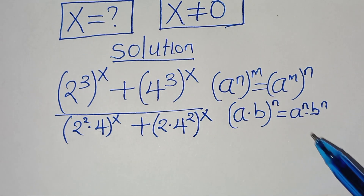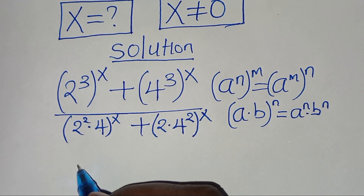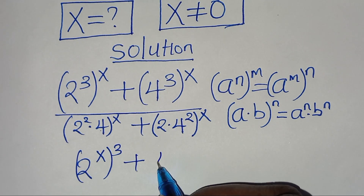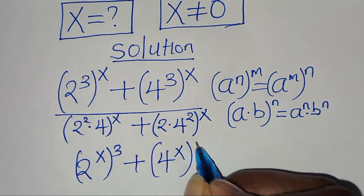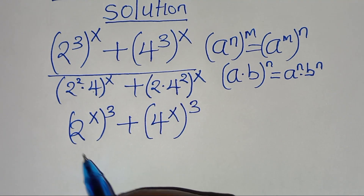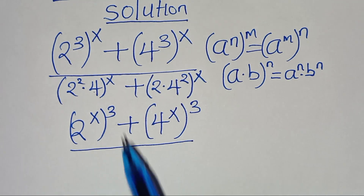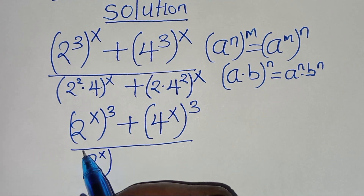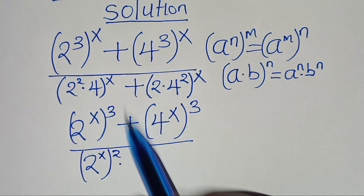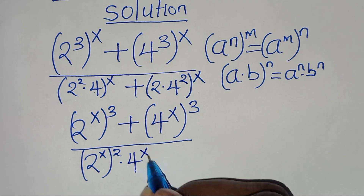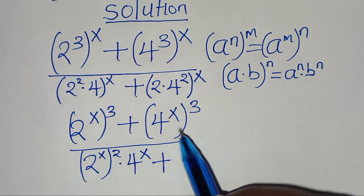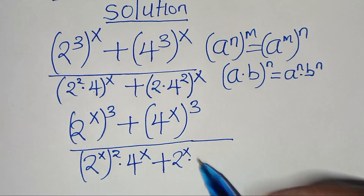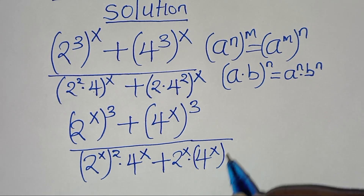Now let's apply these two properties. So in the numerator we have 2 to the power of x, raised to the power of 3, plus 4 to the power of x, raised to the power of 3. Divided by: in the denominator we have 2 to the power of x, raised to the power of 2, multiplied by 4 to the power of x, plus 2 to the power of x, multiplied by 4 to the power of x, raised to the power of 2.